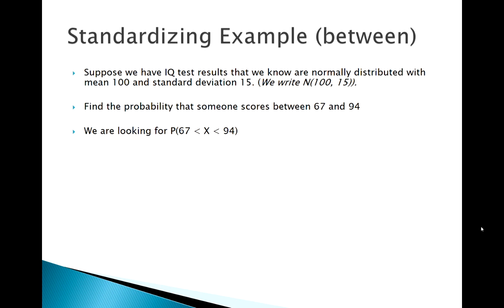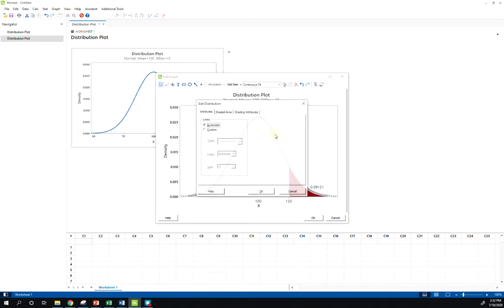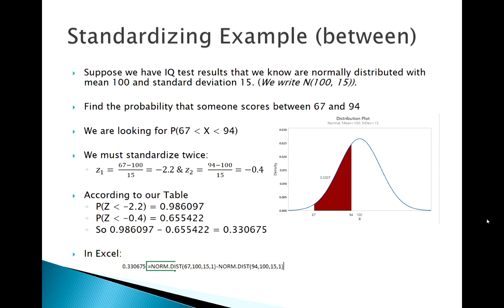Where it gets trickier is a between problem. Find the probability of IQ being between 67 and 94. We need to find two z-scores. Be careful — some people subtract the z-scores at this point, but you must find the corresponding probability for each z-score and then subtract the probabilities, not the z-scores. In Excel, apply NORM.DIST twice and subtract. In Minitab, go to the distribution plot, select 'middle', and enter 67 and 94 — it handles the subtraction automatically.